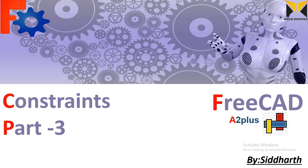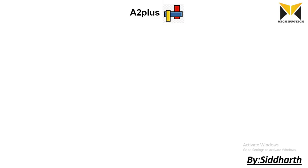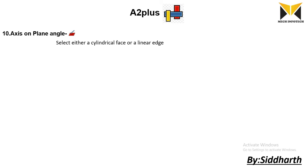In this tutorial we learn the 10th constraint: axis on plane angle. In this constraint we can select either a cylindrical face or a line and edge on one part, and a plane on the other part. Let's go solve one example.